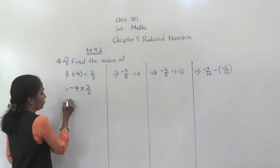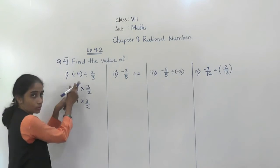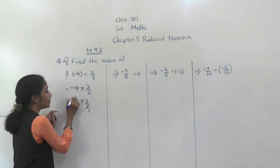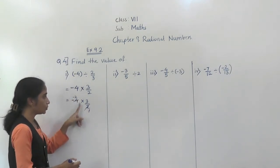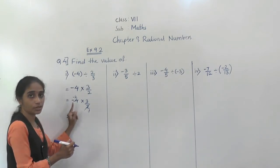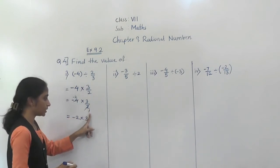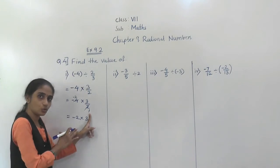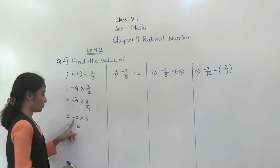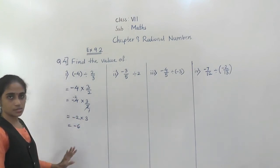So, minus 4 into 3 upon 2. Here, 2 twos are 4, so here will come minus 2. We are doing the reduce term now. Minus 2 we got. So minus 2 into 3. The denominator we got is 1. 2 threes are 6. One number is negative, this is positive, so their product will be negative. So minus 6 is the answer.